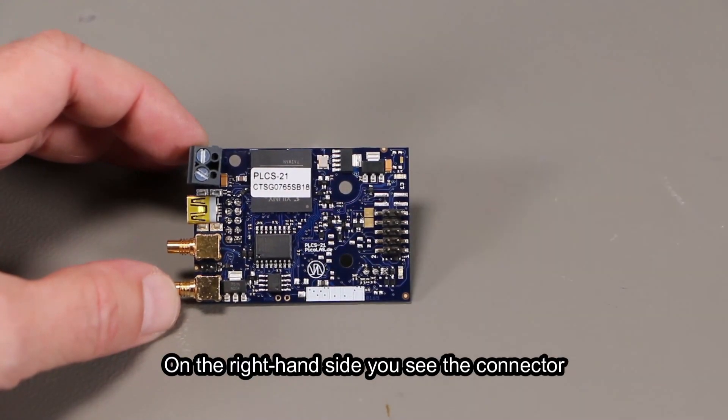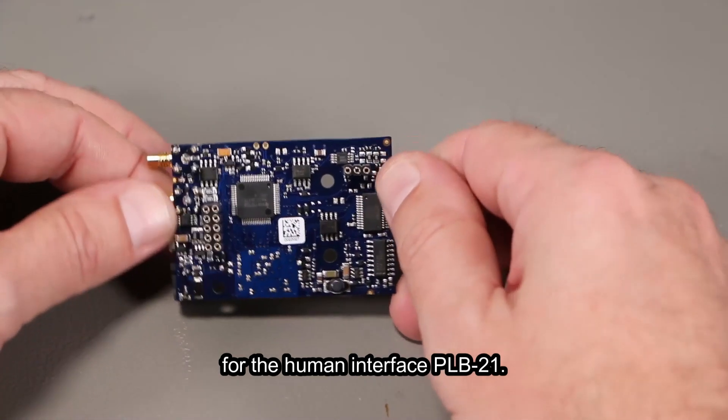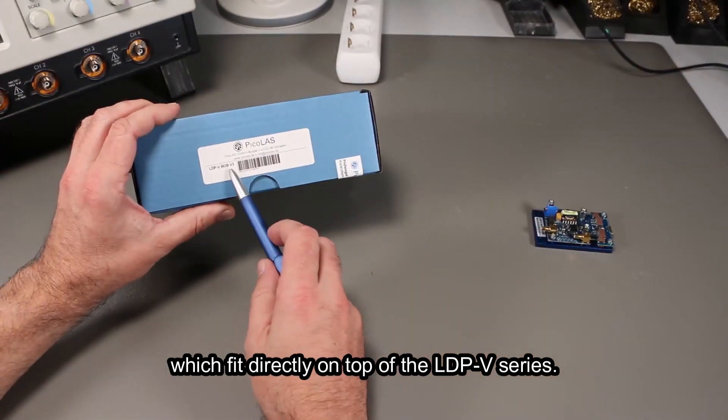On the right hand side you see the connector for the human interface PLB21. On the bottom side you see the connectors which fit directly on top of the LDPV series.